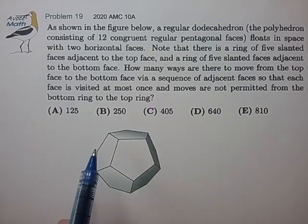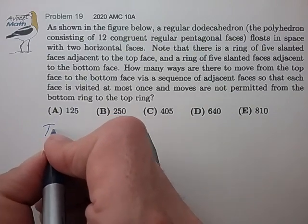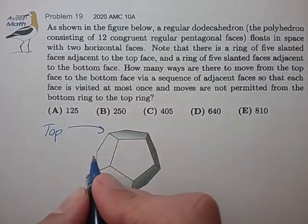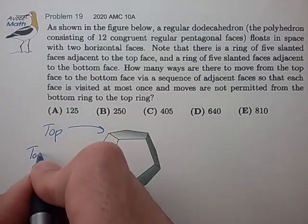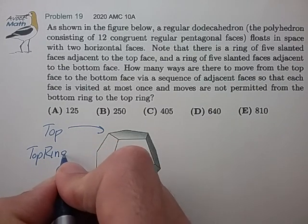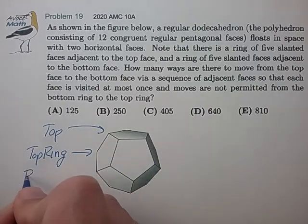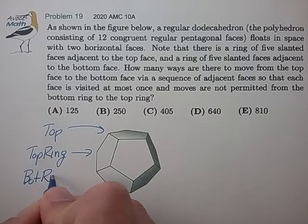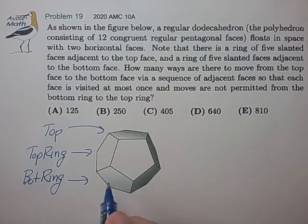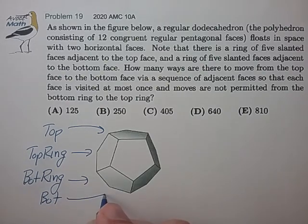That sounds complicated. Let's label a few things in our figure. We have a top face, a top ring of these five faces, a bottom ring of these five faces, and a bottom face.